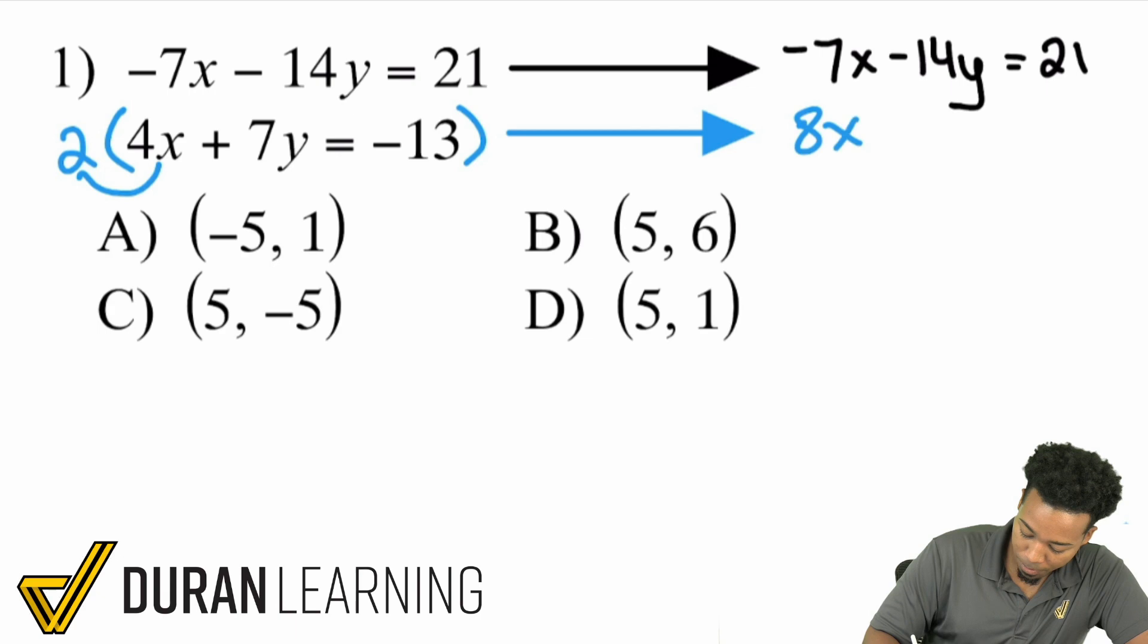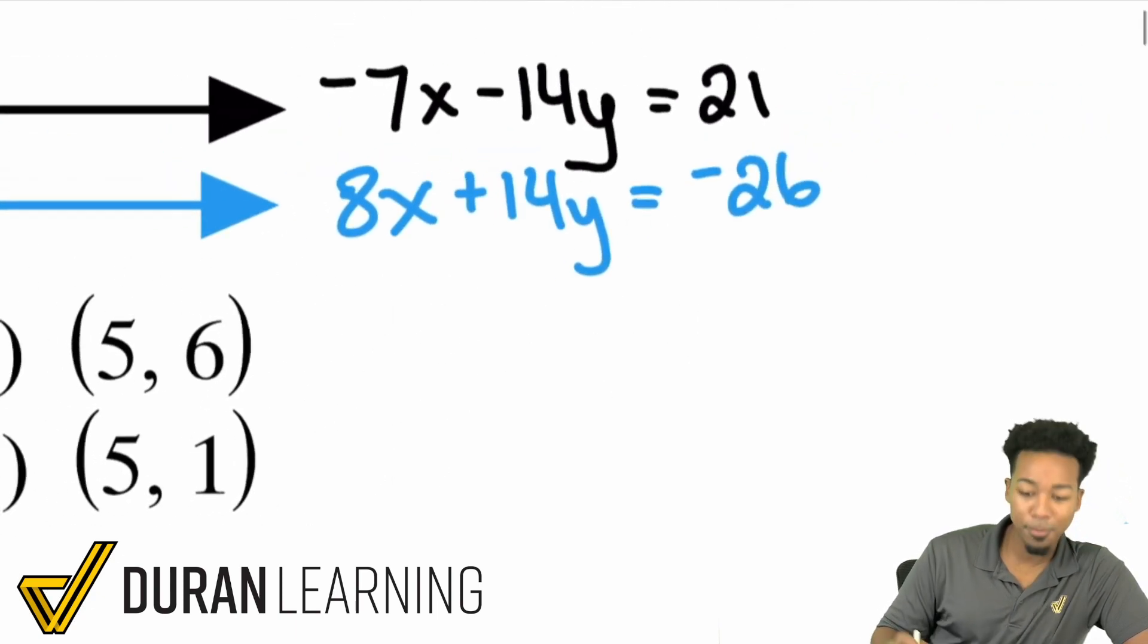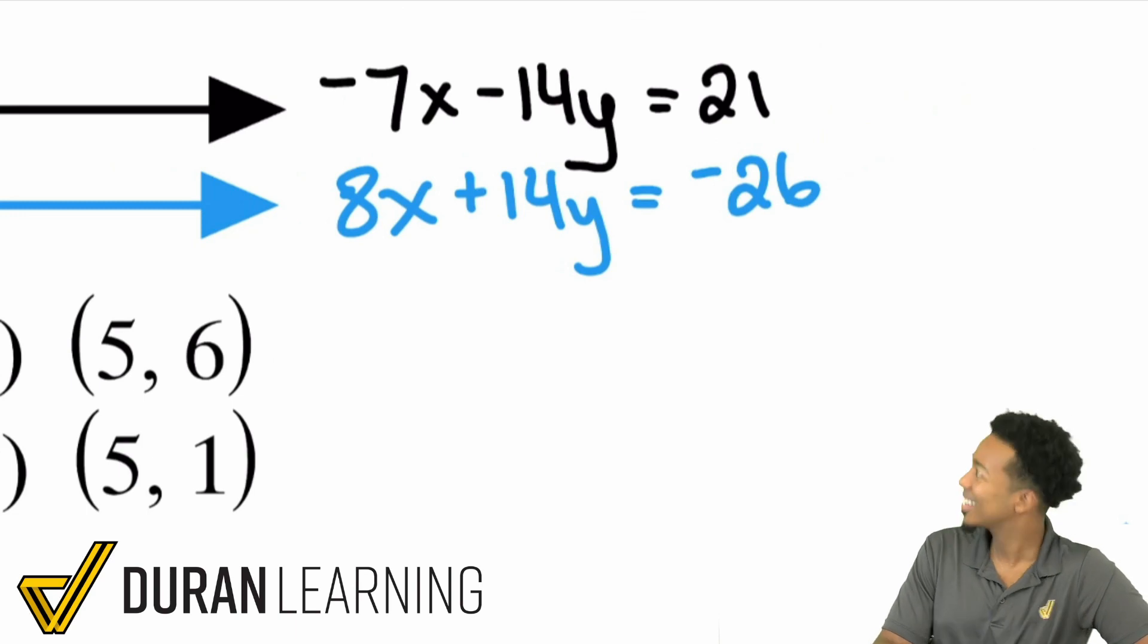2 times 4x, 8x. 2 times 7y, 14y. 2 times negative 13, negative 26. Now look at this masterpiece, everybody. Look at this masterpiece over here.